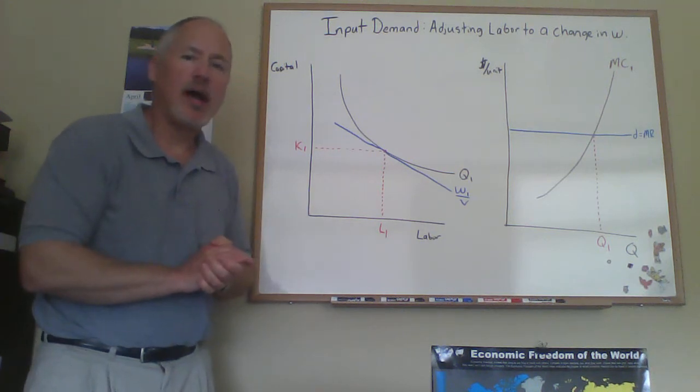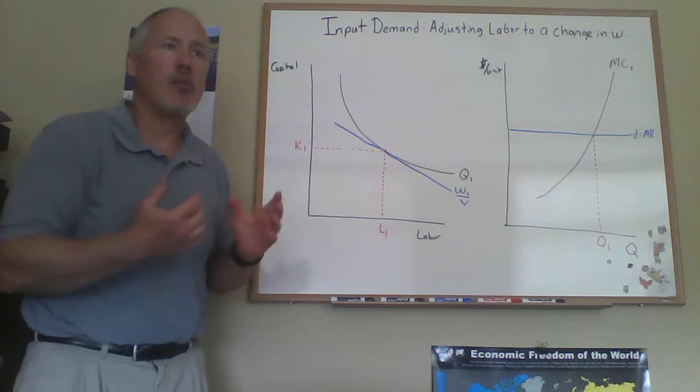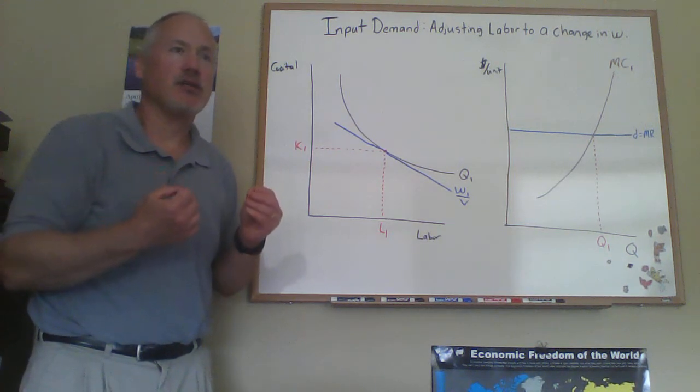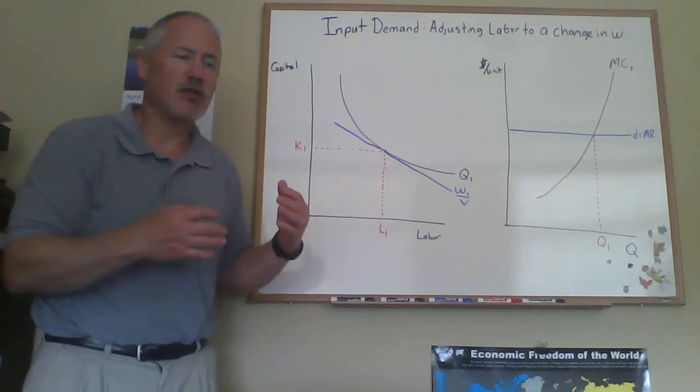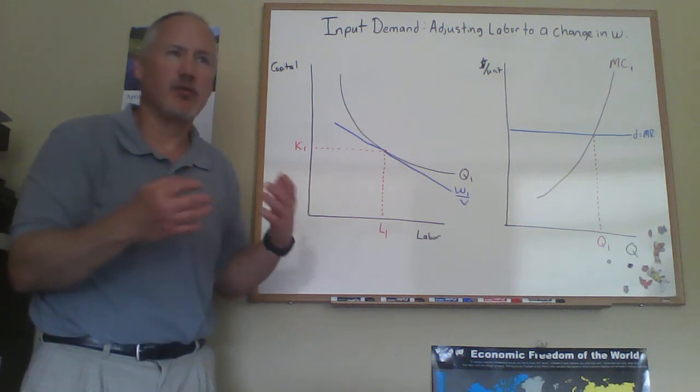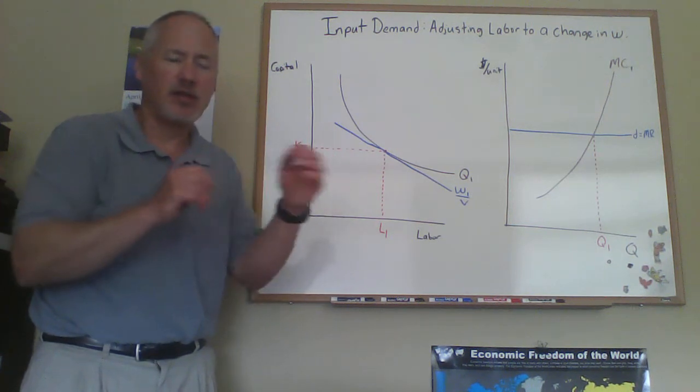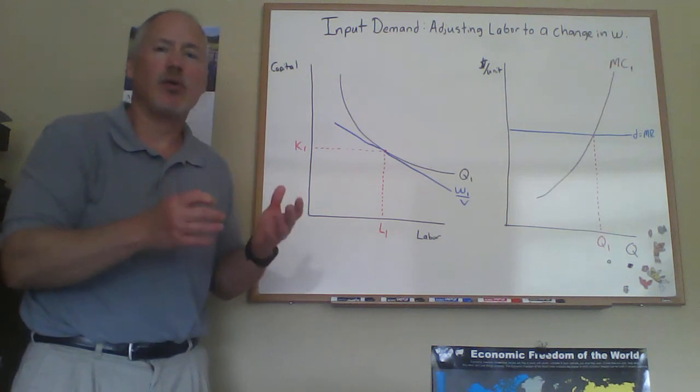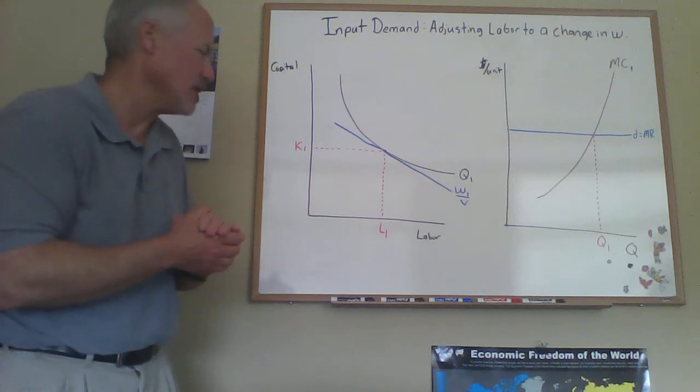So now we're going to look at what happens when the wage of labor goes up. And what we're going to see, there's going to be two parts to this. So just as in Chapter 3, when we were looking at demand, after we showed how to construct the consumer's demand curve, we decomposed that change in demand, or the change in response to a price, into what are known as the income and substitution effects. There could be two components here as well.